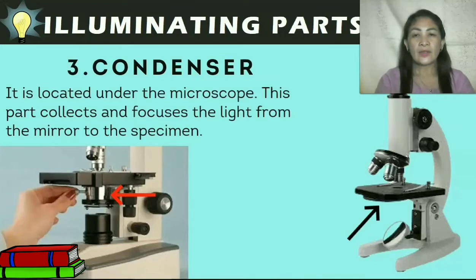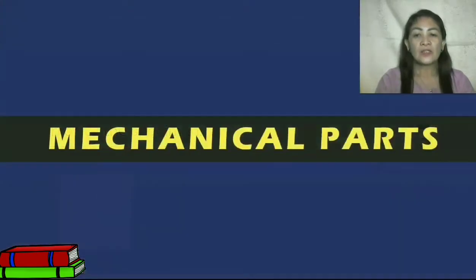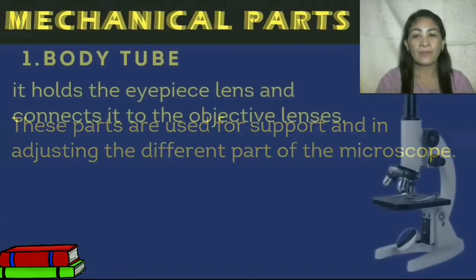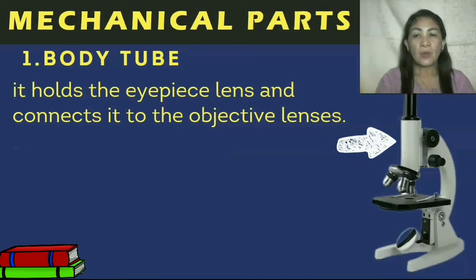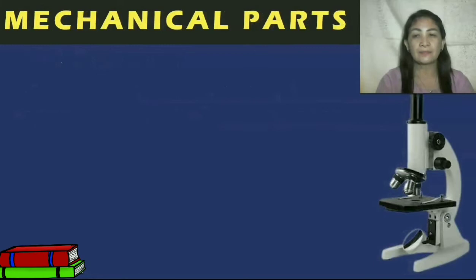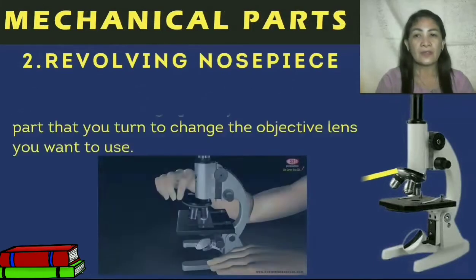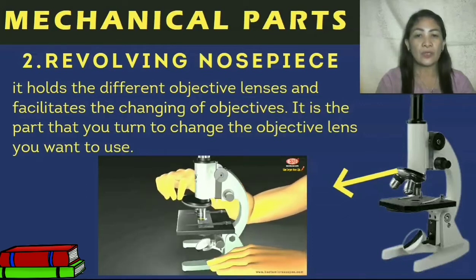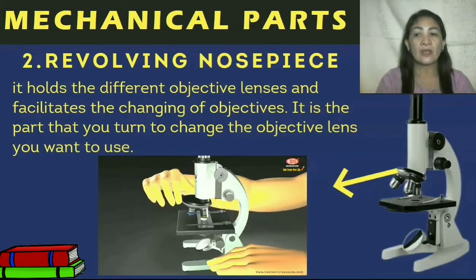The third illuminating part is the condenser, located under the microscope. This part collects and focuses the light from the mirror to the specimen. Now let's explore the mechanical parts of the microscope. These parts are used for support and adjusting the different parts of the microscope. The first is the body tube — it holds the eyepiece lens and connects it to the objective lenses. Second is the revolving nosepiece — it holds the different objective lenses and facilitates the changing of objectives. It is the part that you turn to change the objective lens you want to use.